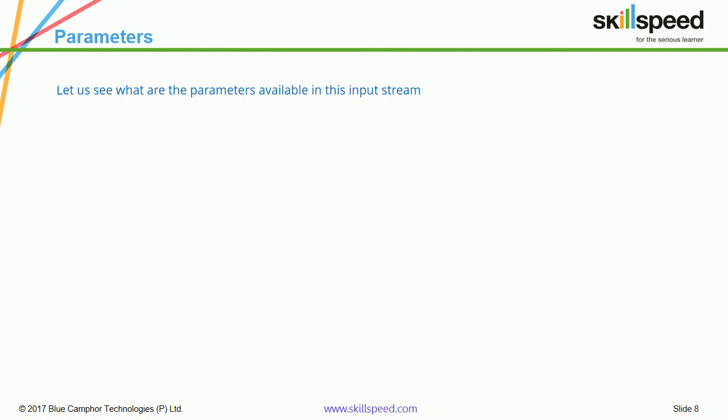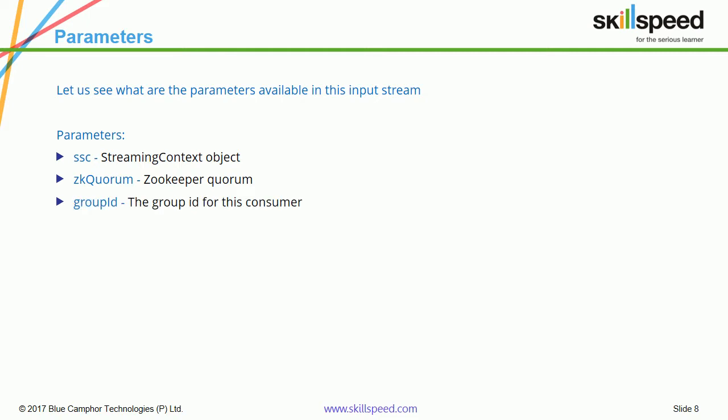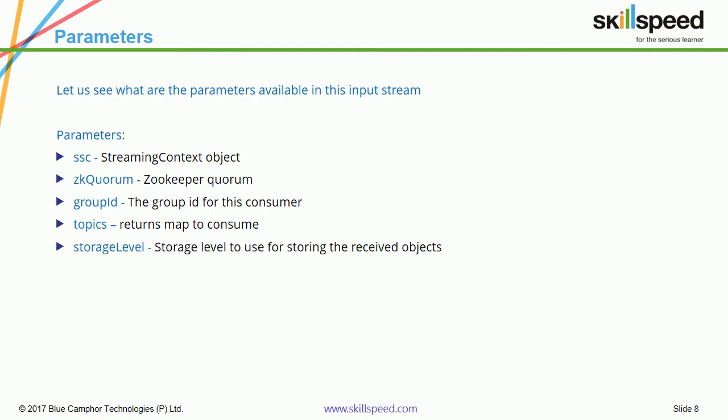Let's have a closer look at the parameters being supplied. The ssc is the StreamingContext object. zkQuorum stands for the ZooKeeper Quorum. groupId is the consumer's group ID. In topics, you mention what topic you want to subscribe to. The storage level can be memory or disk, depending on where you want to store the received objects.